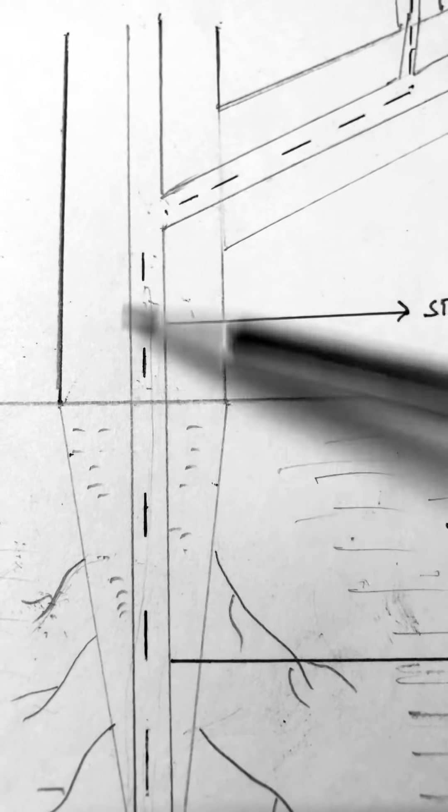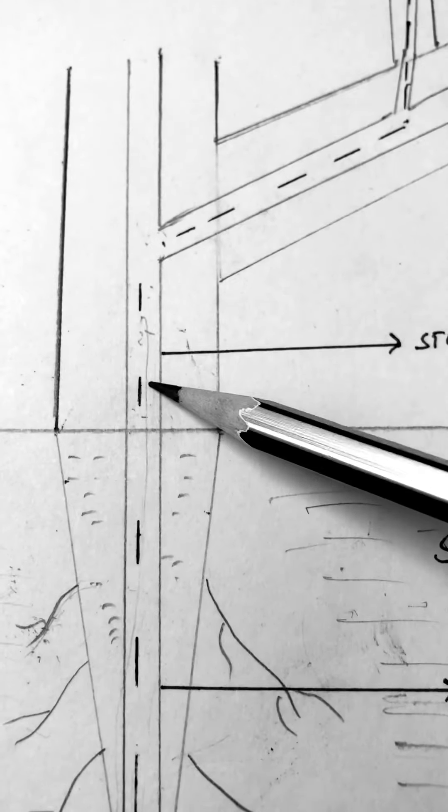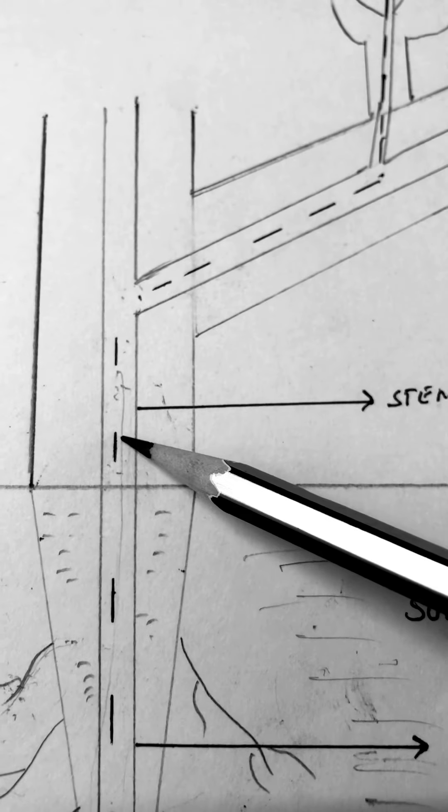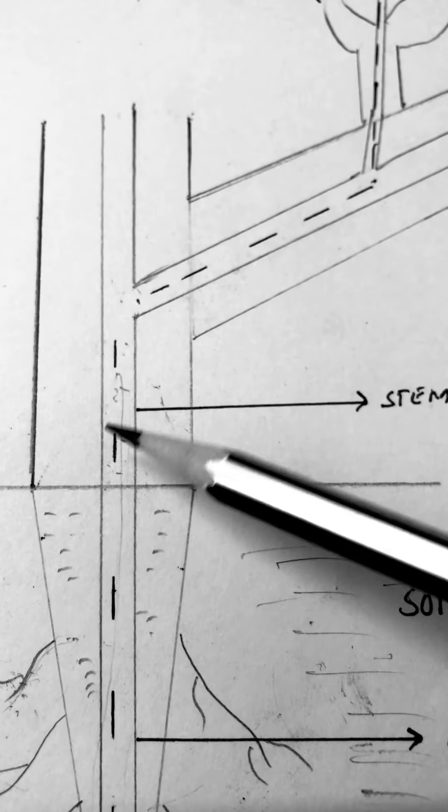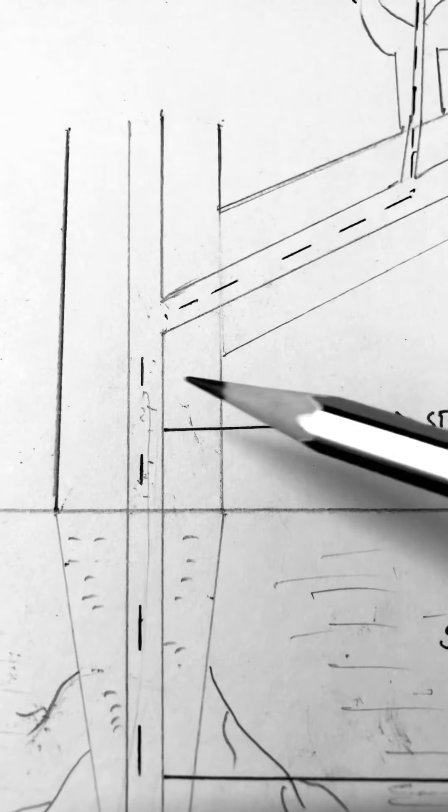The major physical force which helps in upward movement of water through the xylem is the suction pull and this suction pull is exerted by the air. Now, from where does this air come?